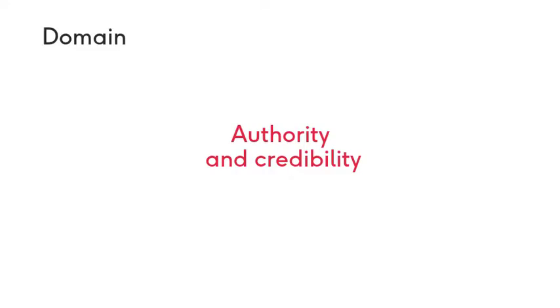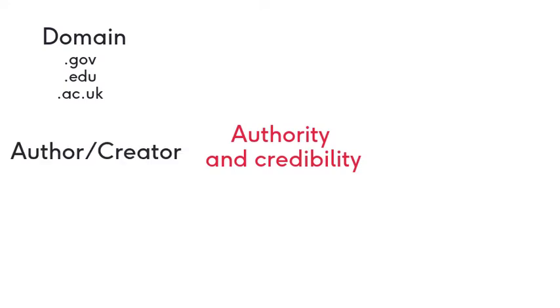Let's look at some more aspects of authority and credibility of website sources. Domains that include .gov, .edu or .ac.uk come from government or education sources and can be considered more trustworthy. Look at the author bio or the about page to assess the credibility. Is the author known within the field? What are their affiliations or credentials? Whose interests do they represent? Is their contact information available such as email, feedback form or telephone number? Sites that are cluttered, difficult to navigate or look unprofessional should be avoided.